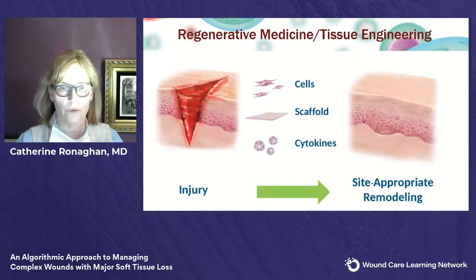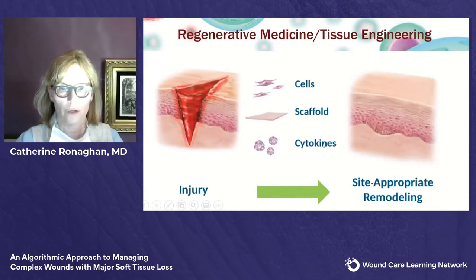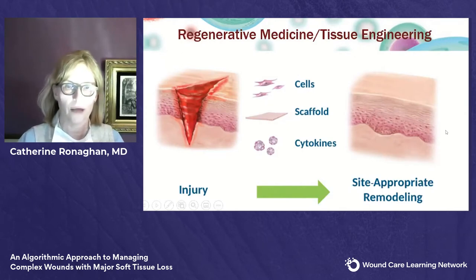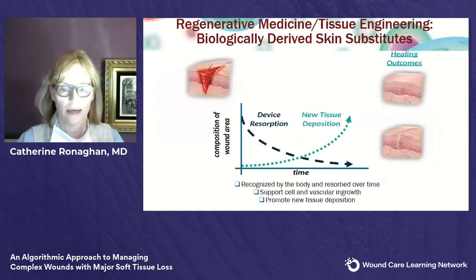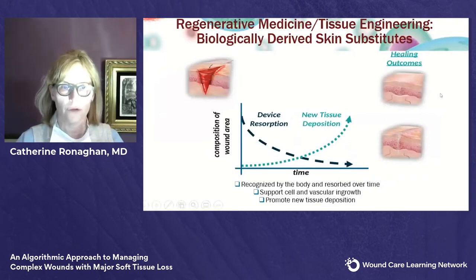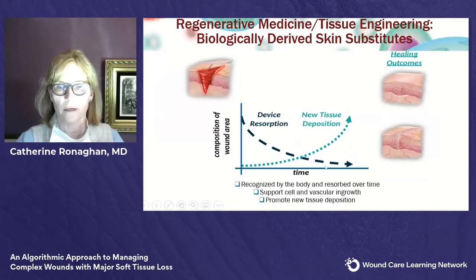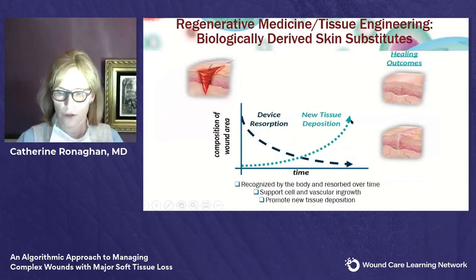The whole notion is: can we regenerate tissue and can we engineer tissue? After an injury, we want to use a variety of materials — xenografts or materials within xenografts — to end up with site-appropriate remodeling rather than scarring. The entire notion of regenerative medicine and tissue engineering is that the body will recognize the material and there will be complete device resorption over time, replaced with site-specific new tissue.